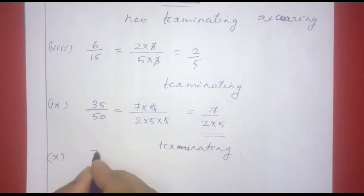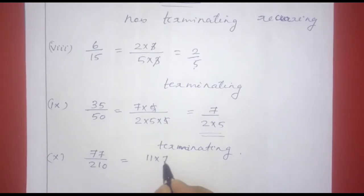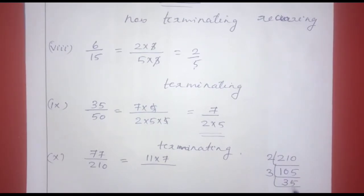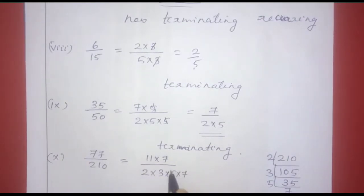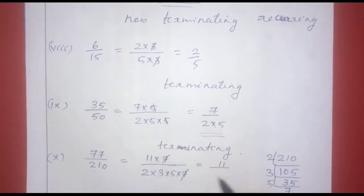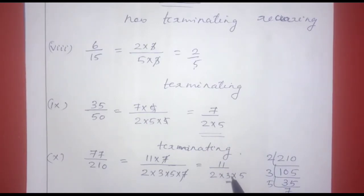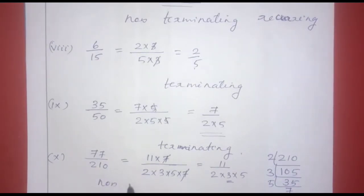Next: 77 divided by 210. 77 is 11 into 7, and 210 is 2 into 3 into 5 into 7. After cancellation, we get 11 divided by 2 into 3 into 5. Since the denominator contains 3 as a factor, it is not of the form 2 raised to n into 5 raised to m. Therefore, the decimal expansion is non-terminating repeating.